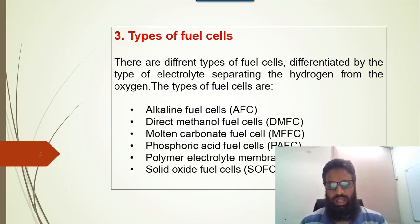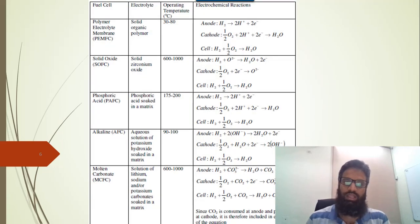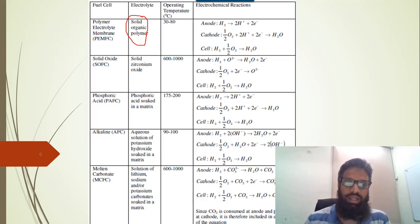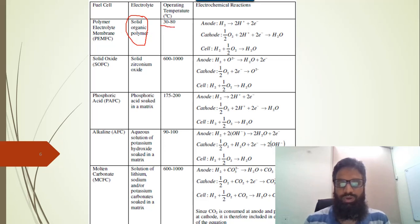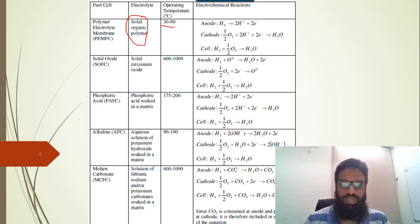There are multiple types of fuel cell: alkaline fuel cell, direct methanol fuel cell, molten carbonate fuel cell, phosphoric acid fuel cell, polymer electrolyte membrane fuel cell (also known as proton exchange membrane fuel cell), and solid oxide fuel cell. The basic difference between them is the electrolyte used. For example, the PEM fuel cell uses a solid organic polymer as electrolyte and operates at approximately 30 to 80 degrees Celsius — essentially room temperature.